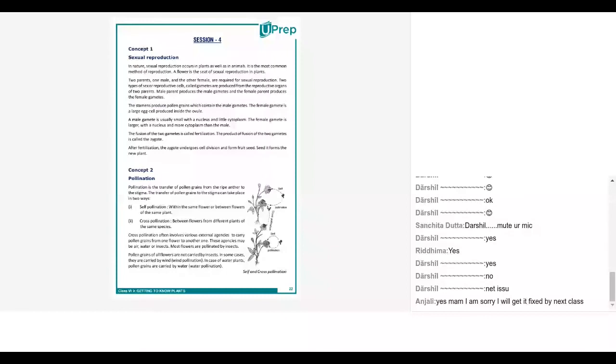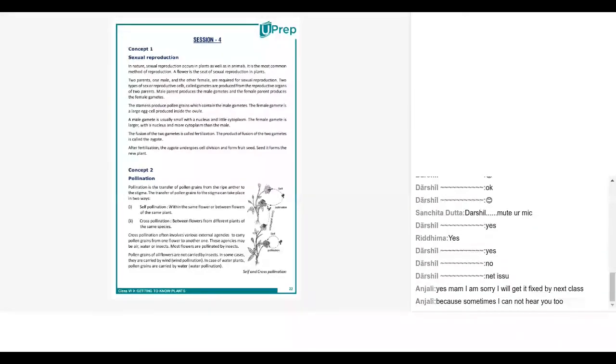In sexual reproduction, what happens is that there are two parties involved. One is a male gamete, the other is a female gamete. So that is the main keyword for sexual reproduction which happens in plants as well as in animals. This is the most common form of reproduction.